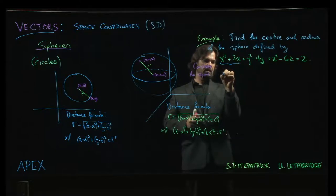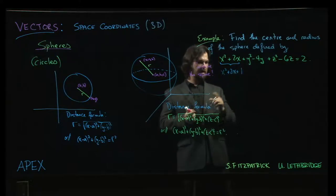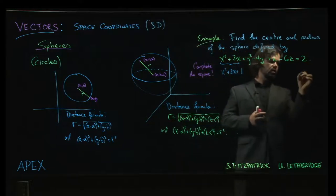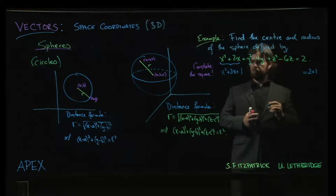So here we would need x squared plus 2x plus 1. Now of course if we add 1 on one side of the equation, we should also add it on the other side, 2 plus 1.